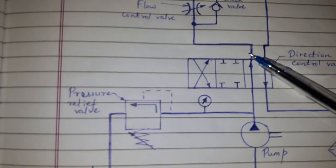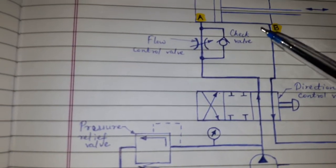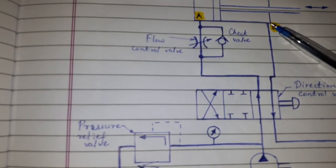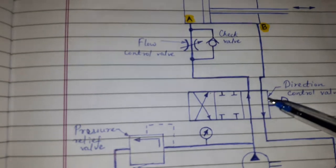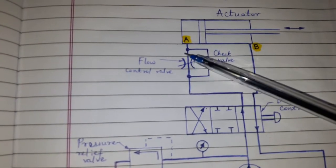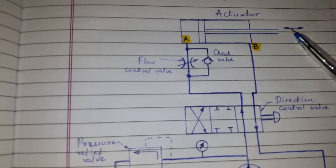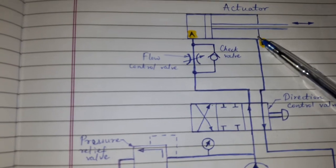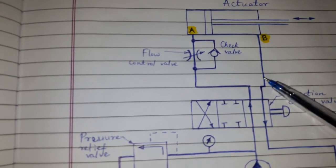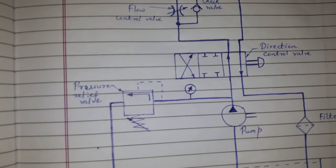The oil is directed to port A or B of the actuator by the directional control valve. When the oil enters through port A, piston will move from left to right. The oil from the other side of the piston will return through port B via directional control valve to the oil tank.